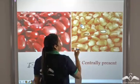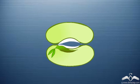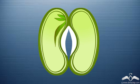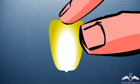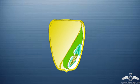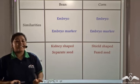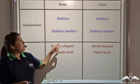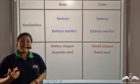It is almost centrally located. In case of a bean, the embryo is present at the embryo marker which is known as the hilum. In case of a corn, the embryo is present at the embryo marker which is centrally located. This is the embryo. So this forms the next similarity between beans and corns — both of them have embryo markers where the embryo is located inside the seed.